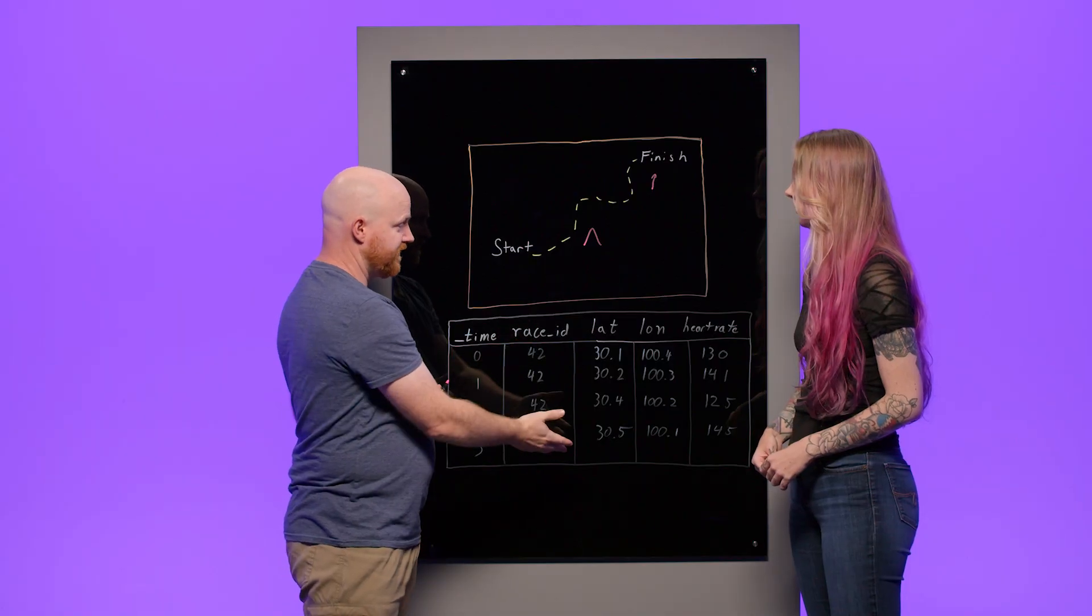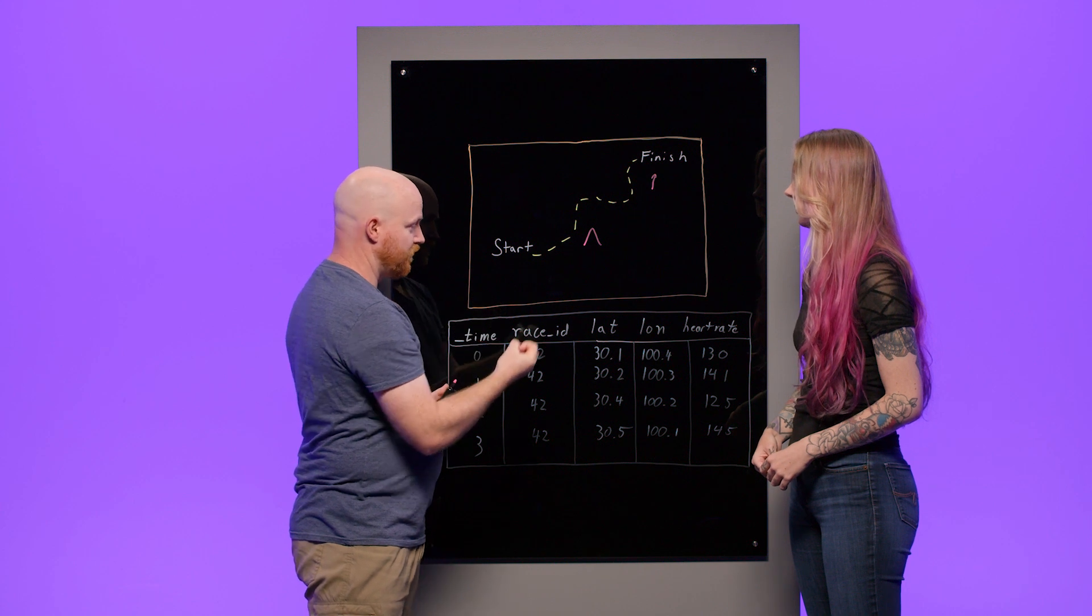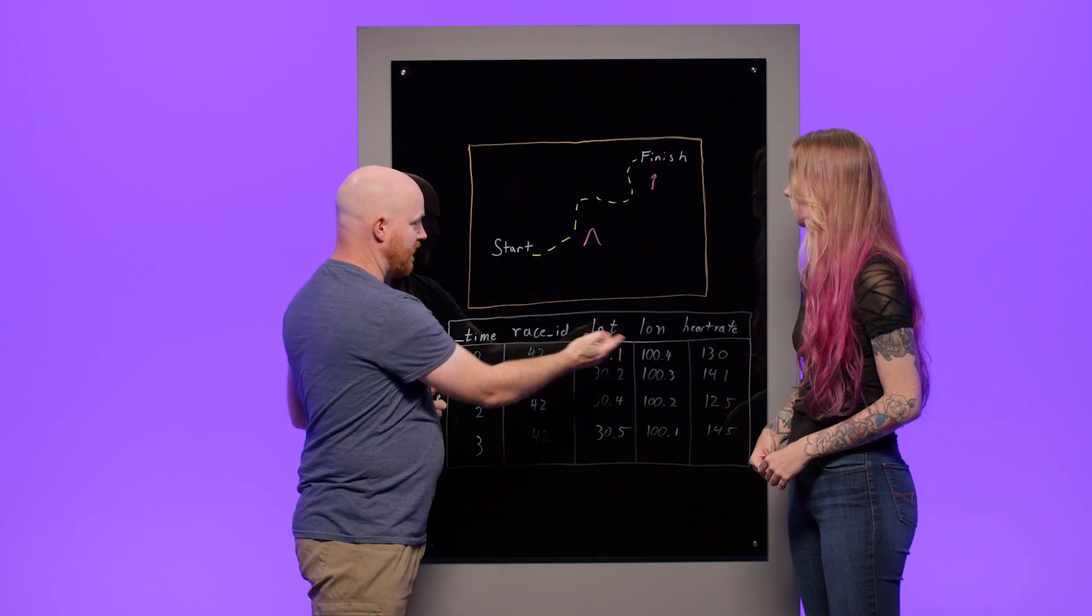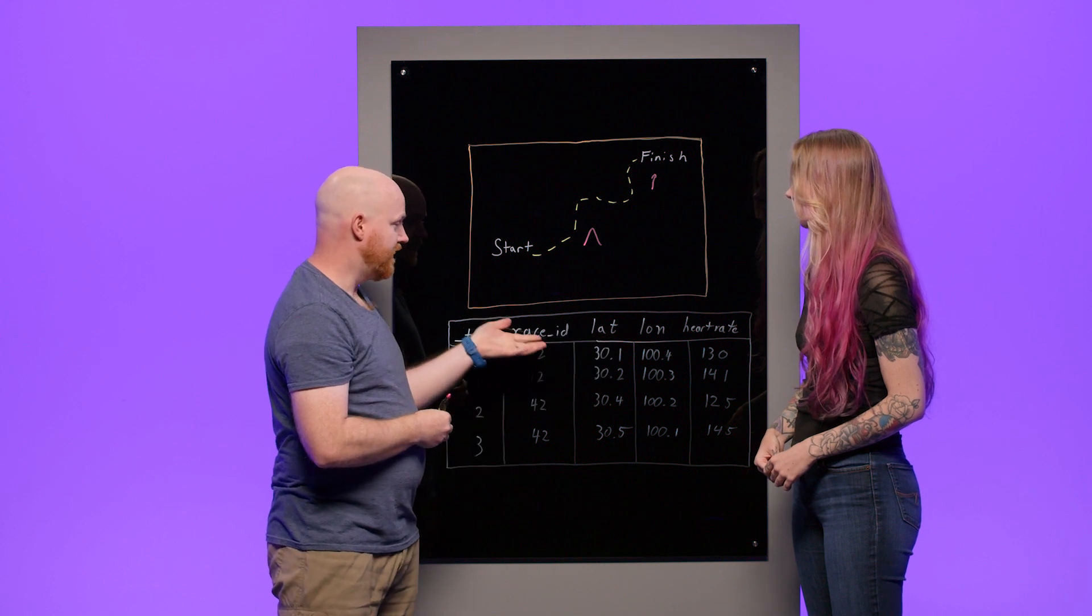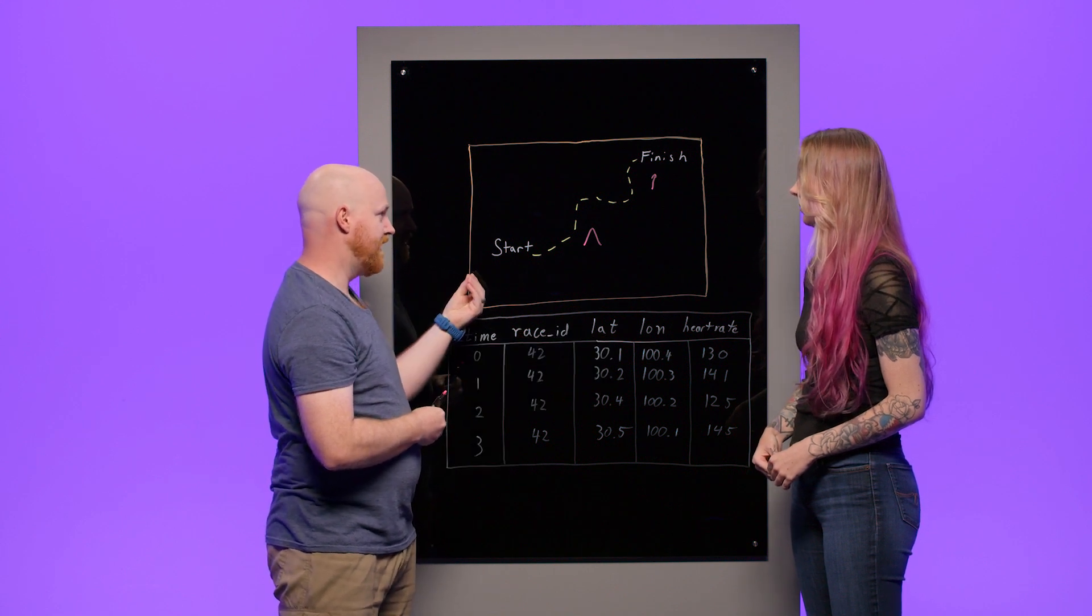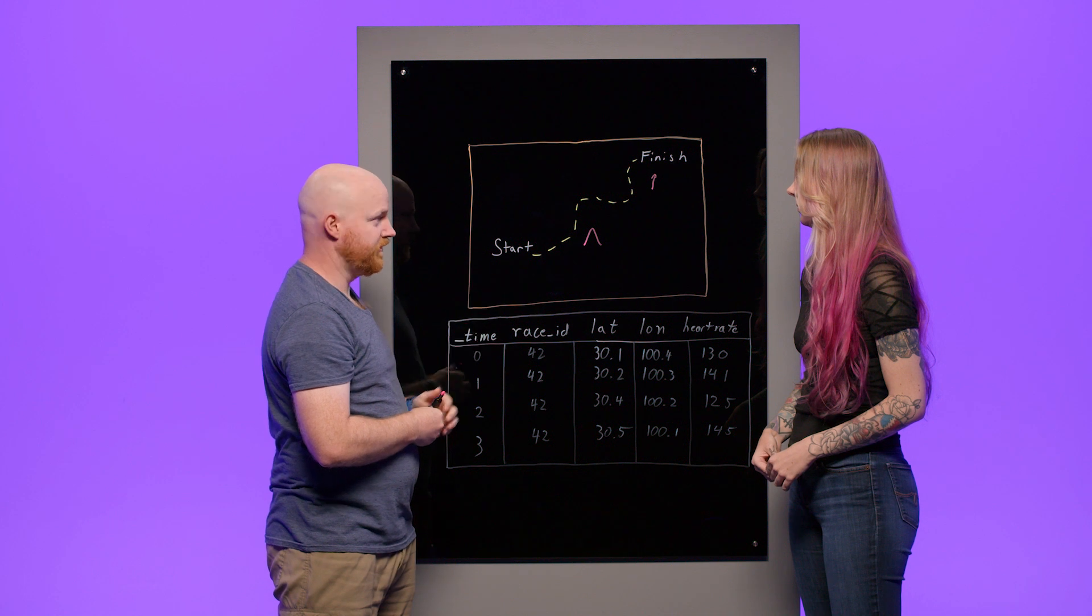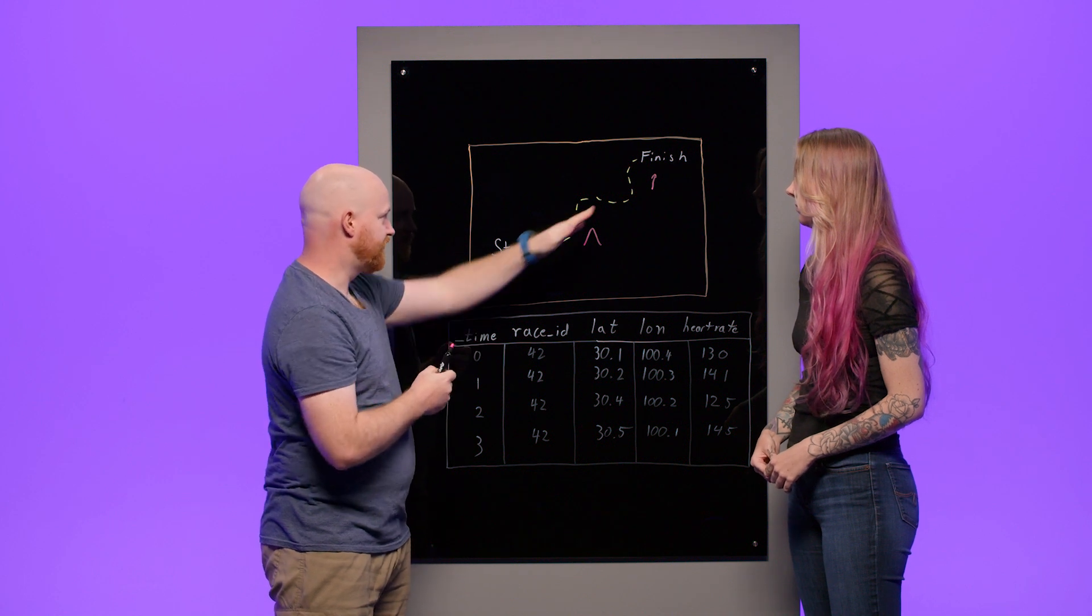And how would we visualize this data? To visualize this data, you're going to need some kind of software application. In InfluxDB Cloud, we have Mapbox that allows you to draw out these tracks on a map. You would use Flux to query this data back out of a bucket. You'd want to specify that you've got both your latitude and longitude fields and potentially your heart rate data, then pull that data back out and hand it off to the Mapbox visualizer in the UI. It would then be able to draw a track similar to this.